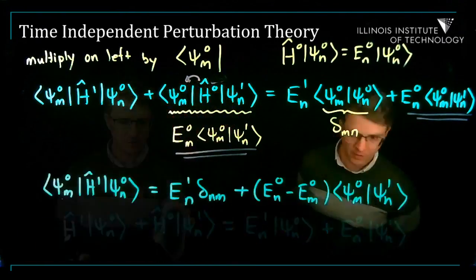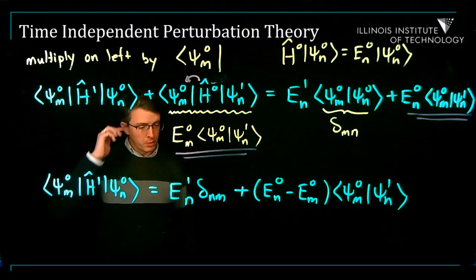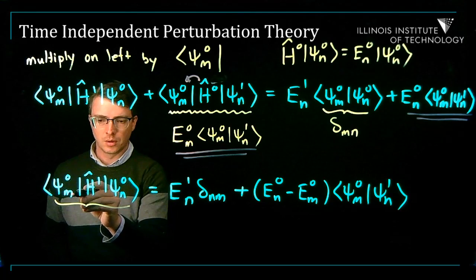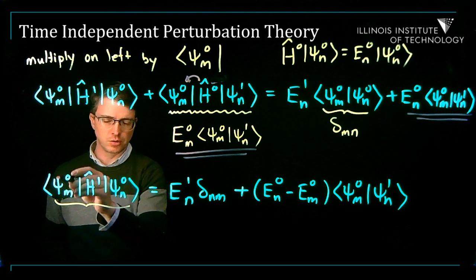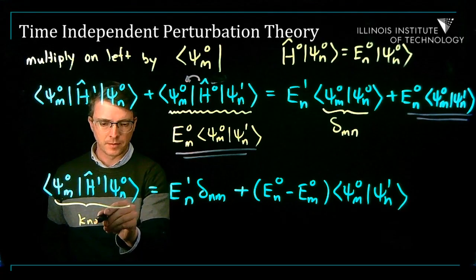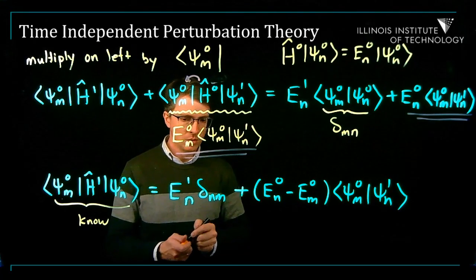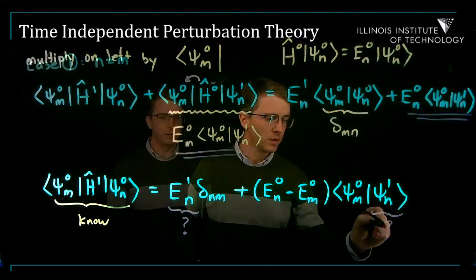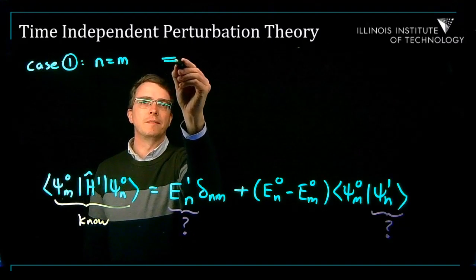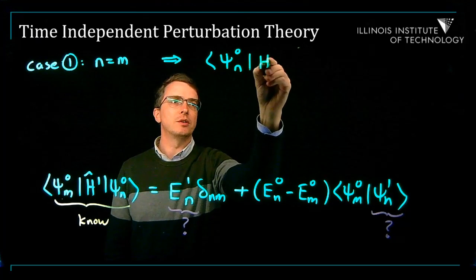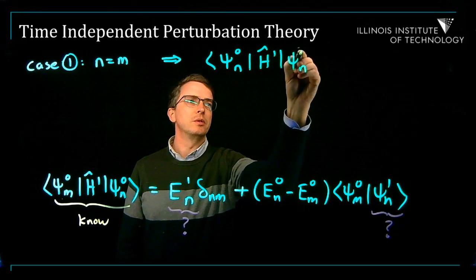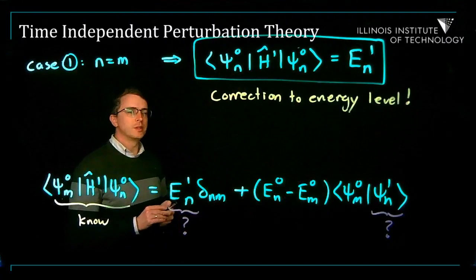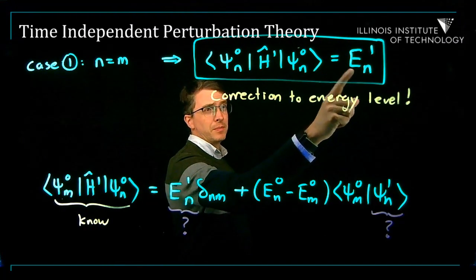We can simplify this. Remember what you know: we know the unperturbed states, so we know psi-m-zero, psi-n-zero, and the full Hamiltonian H. What we're trying to find are these corrections. So if n equals m, I get the following: psi-n-zero, H-hat-one, psi-n-zero, equals E-n-1. This is a formula for the correction to the energy levels due to the perturbation.